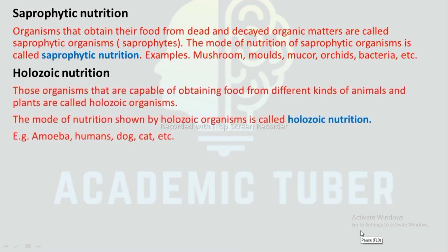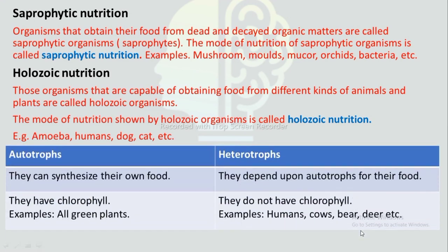Holozoic nutrition: Those organisms that are capable of obtaining food from different kinds of animals and plants are called holozoic organisms. The mode of nutrition shown by holozoic organisms is called holozoic nutrition. Examples include amoeba, humans, dogs, cats, etc.